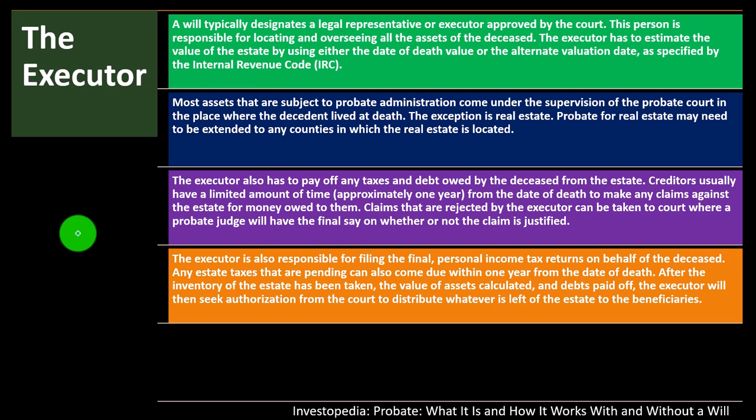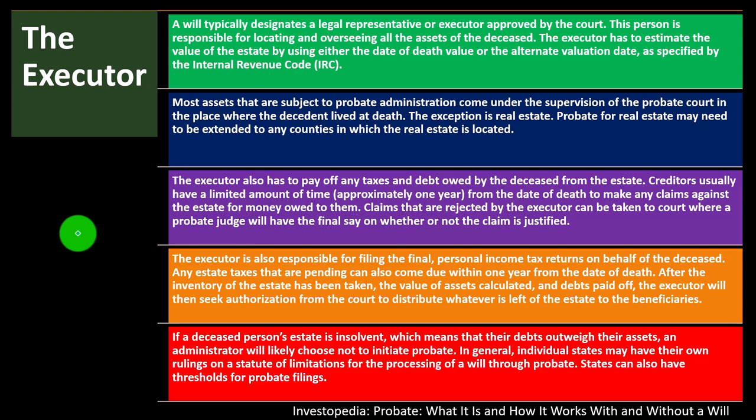After the inventory of the estate has been taken, the value of assets calculated, and debts paid off, the executor will then seek authorization from the court to distribute whatever is left of the estate to the beneficiaries. In an ideal process, distribution to beneficiaries happens last — you want to take care of the liabilities first, liquidating assets if necessary. If you pay beneficiaries before paying off liabilities, it becomes very difficult to recover those funds, so paying liabilities first is the preferred order of operations.